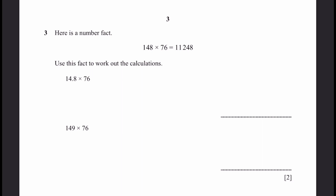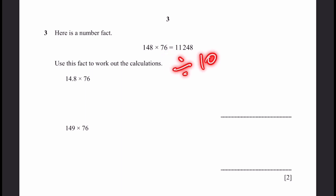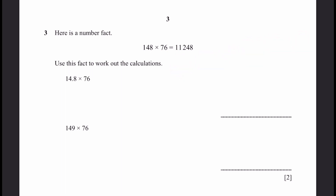Question 3. Here's a number fact: 148 times 76 equals 11,248. Use this fact to work out the calculations. 14.8 times 76 is just this number fact divided by 10. So 11,248 divided by 10 equals 1,124.8. That's the answer.